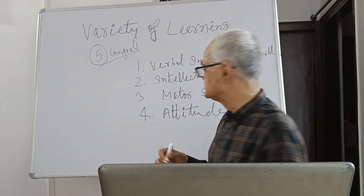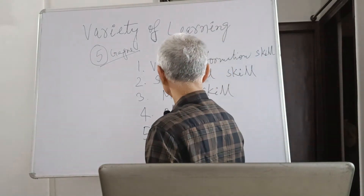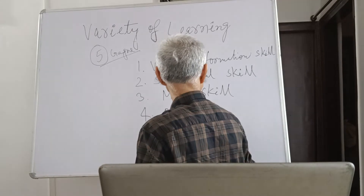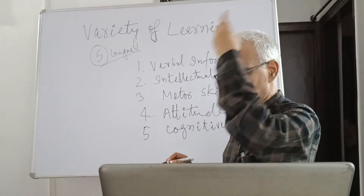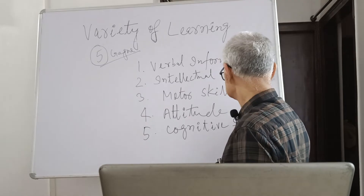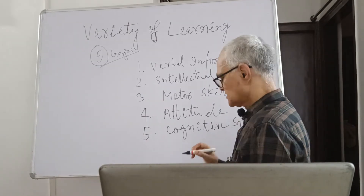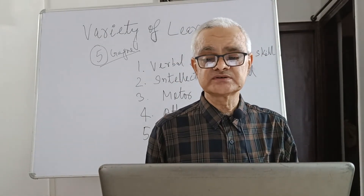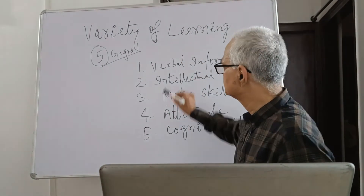The last one is cognitive strategies. Cognitive means being governed by your intellect, that is, being governed by your brain. Cognitive strategies are strategies for thinking and problem solving — this is metacognition.